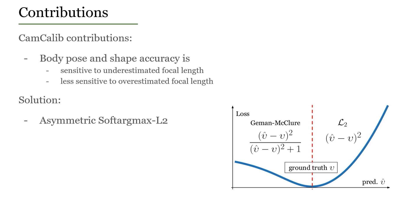Moreover, we observe that human pose and shape estimation accuracy is quite sensitive to underestimation of focal length, and less sensitive to overestimation. Therefore, we modify the soft arg max L2 term to be asymmetric, such that a lower penalty is applied when the focal length is overestimated than when it is underestimated.